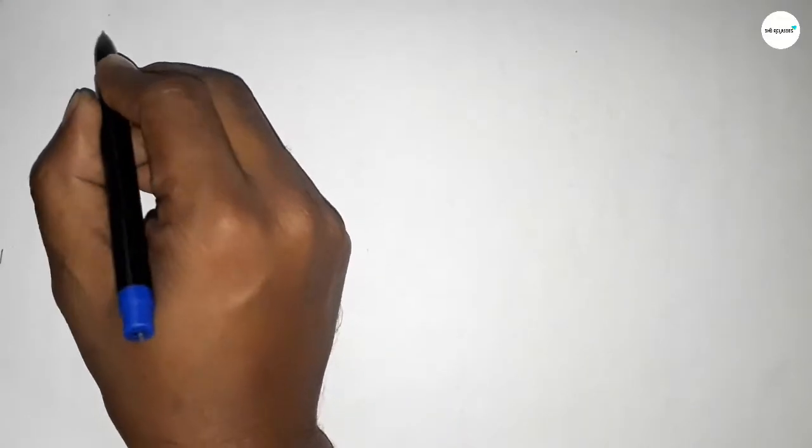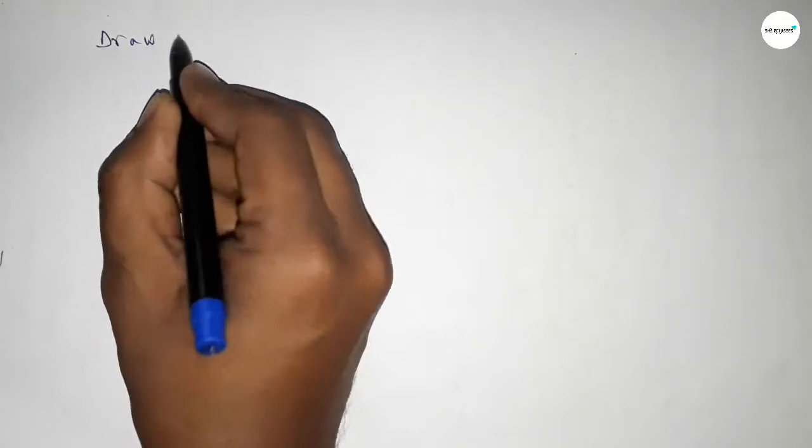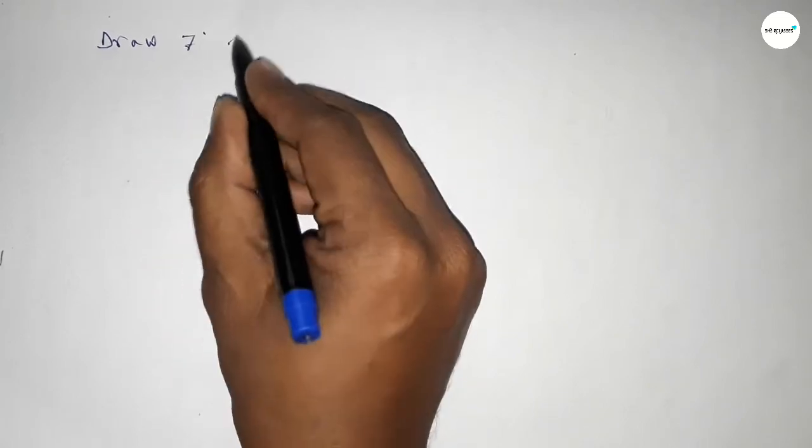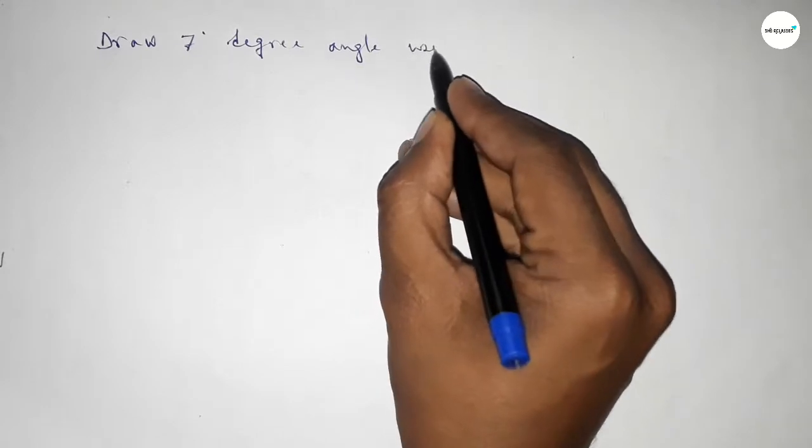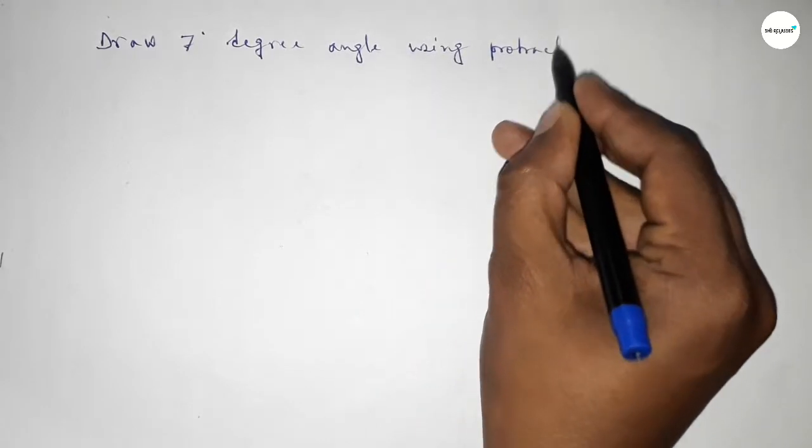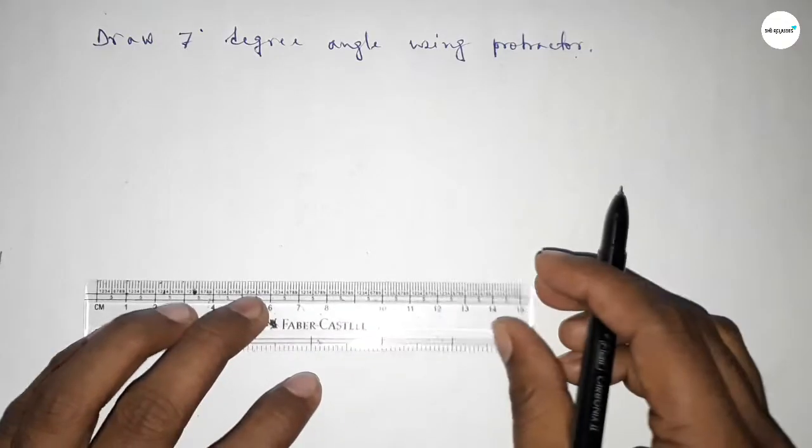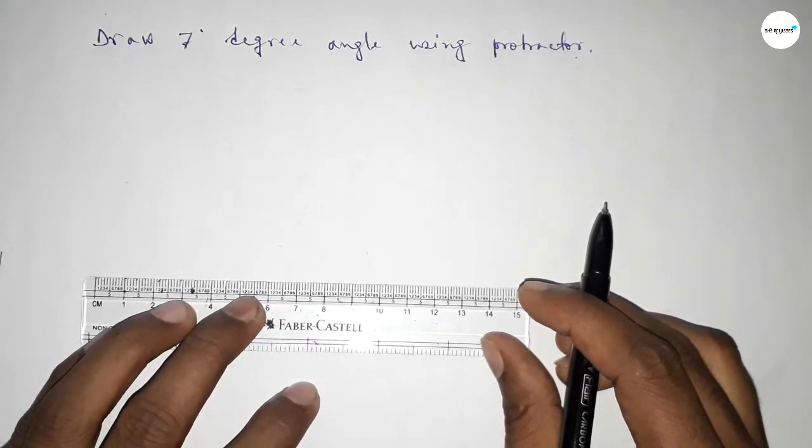Hi everyone, welcome to Essay Share Classes. Today in this video we have to draw a seven degree angle using a protractor. So constructing a seven degree angle, let's start the video. First of all, we have to draw a line of any length.